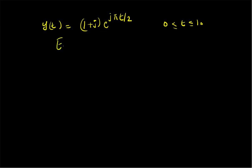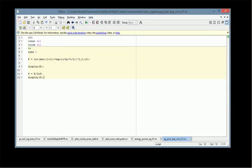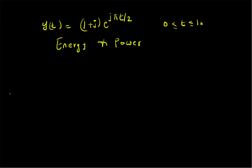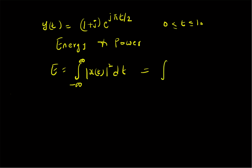The MATLAB code: y(t) is given by (1+j) times exponential of jπt/2. The energy calculation is based on the definition E = integral from minus infinity to plus infinity of |x(t)|² dt. Since x(t) is only defined from zero to ten, this becomes the integral from zero to ten of |( 1+j) · e^(jπt/2)|² dt.